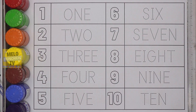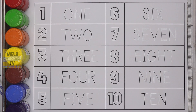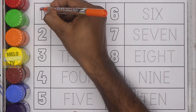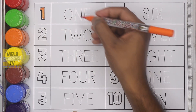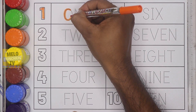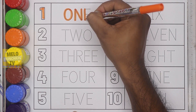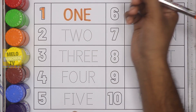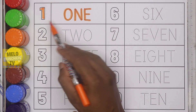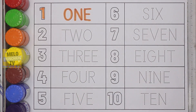Hello kids! Today we are going to learn numbers and number names from one to ten. Let's get started. First, I'll take orange color and write the number one. This is number one and the spelling is O-N-E, one.